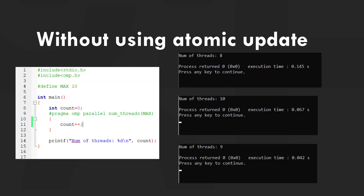Let's see an example of what happens when we don't use OMP atomic update. In this example, I have defined max to be 10, initialized the count to 0, and then used #pragma OMP parallel num_threads max, inside which I have incremented the value of count. The expected answer is 10, but as we can see, we are getting different output every time — like 8, 9, or 10. This is because multiple threads are trying to simultaneously update the same variable.